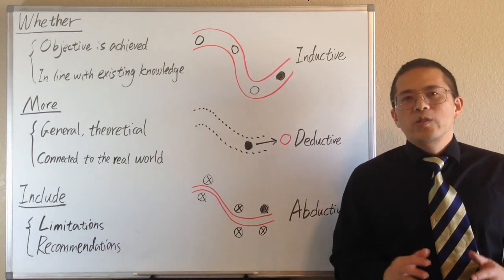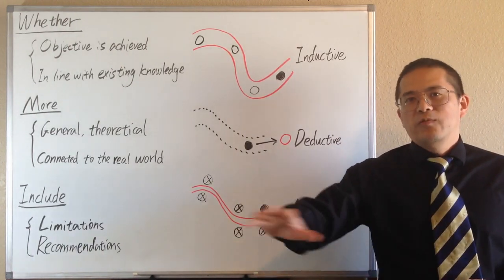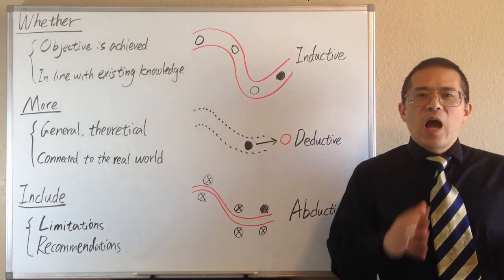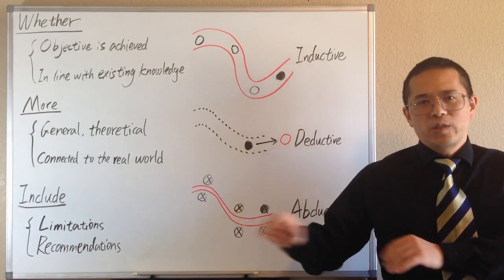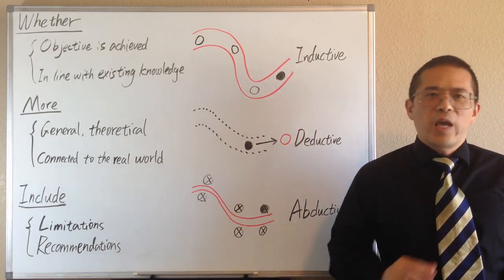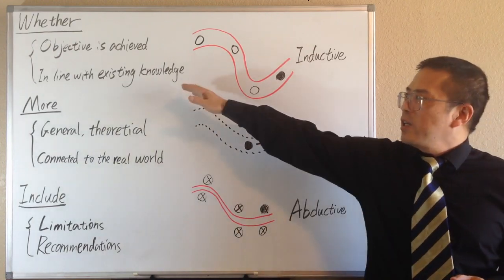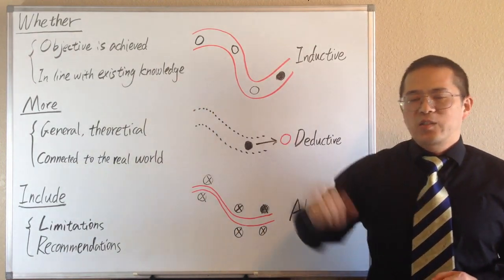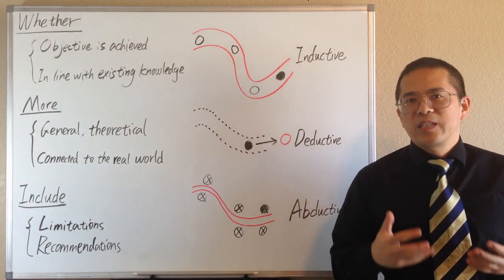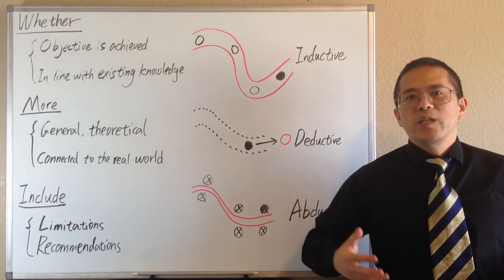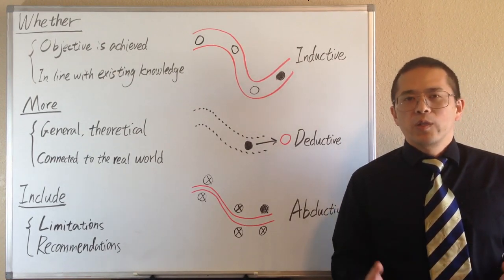Second, we should locate our results in the big picture of related literature. How do our results compare with results from other researchers? We should answer whether the results in this study are in line with existing knowledge. If not, we should attempt to explain the discrepancies, which may lead to new findings in addition to our original objectives.